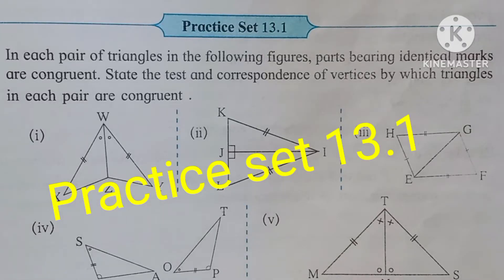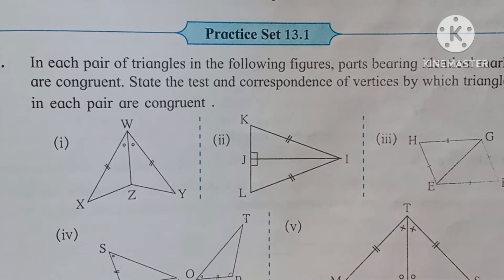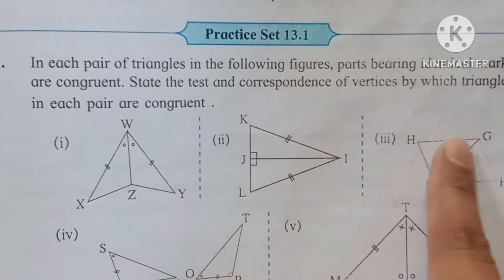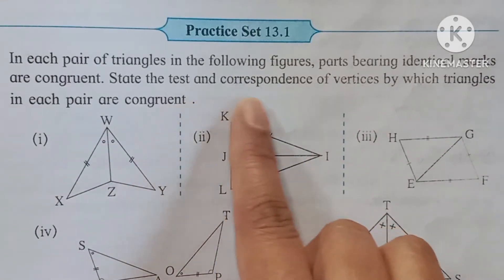Hello students, welcome to Advita Education Channel. Today we are going to solve Practice Set 13.1. In each pair of triangles in the following figures, parts bearing identical marks are congruent. State the test and correspondence of vertices by which triangles in each pair are congruent.